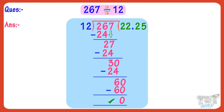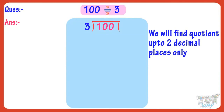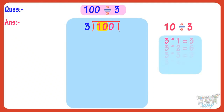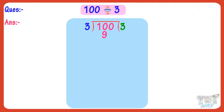Now let's take one more example. We have to divide 100 by 3. Remember, we have to find the quotient just up to two decimal places, even if the number is not completely divided. For dividing the first two digits, we find the multiple of 3 less than or equal to 10. 3 multiplied by 3 equals 9. So write 3 in the quotient and 9 below 10, and subtract. On subtraction, we get 1.